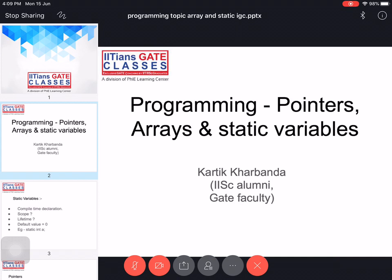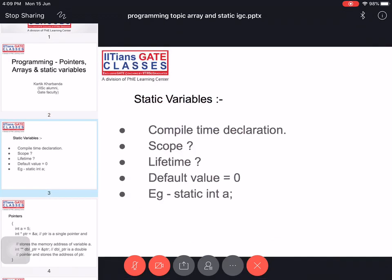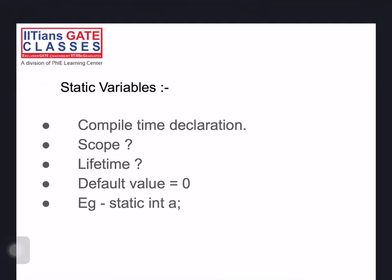Starting with static variables first: what is the difference between a normal variable and a static variable? A local variable is something declared during runtime — that means when your program is loaded in main memory and executing, memory is assigned to local variables. Static variables are special variables actually declared at compile time itself.